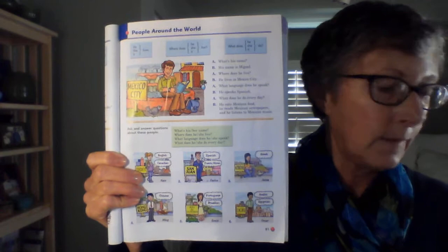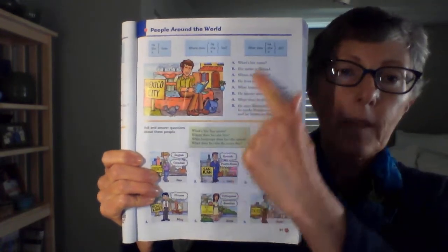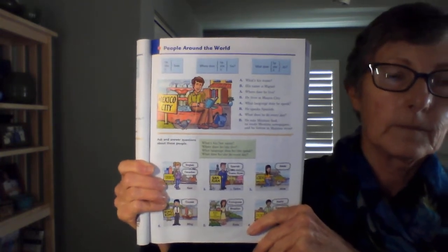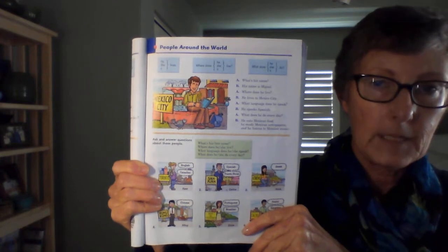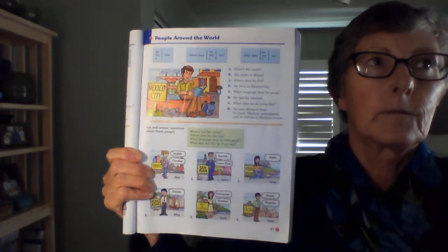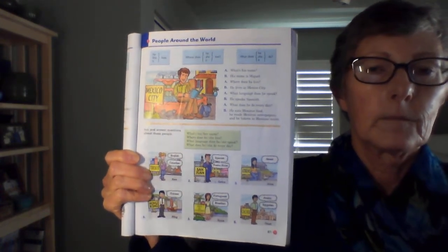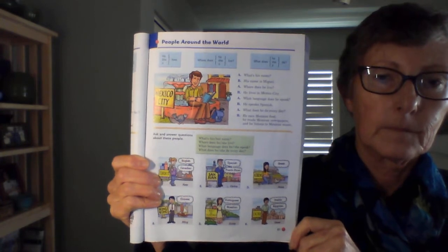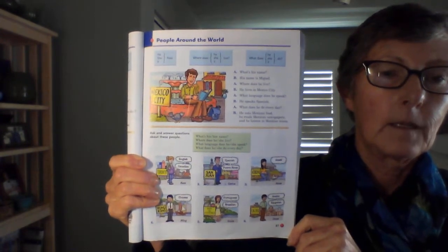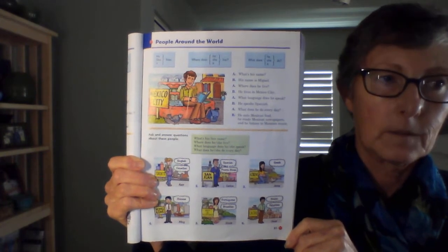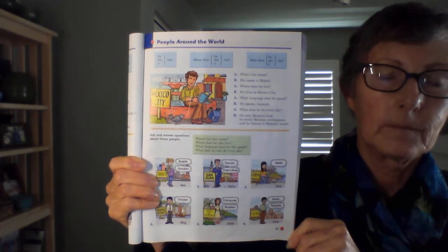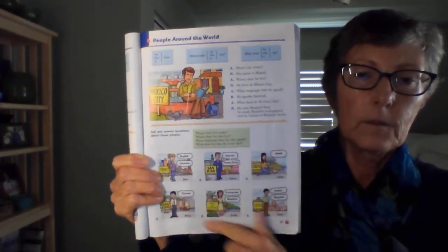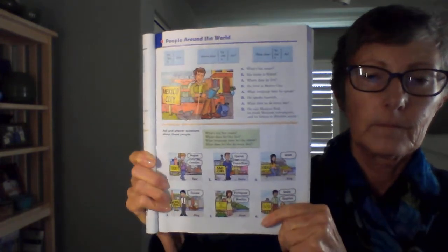We're going to listen to page 81 — 'People Around the World.' Listen to the model. What's his name? His name is Miguel. Where does he live? He lives in Mexico City. What language does he speak? He speaks Spanish. What does he do every day? He eats Mexican food, he reads Mexican newspapers, and he listens to Mexican music.